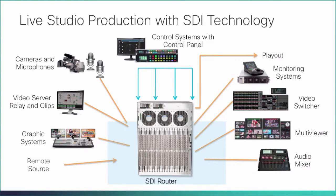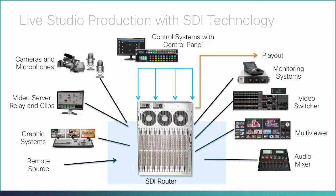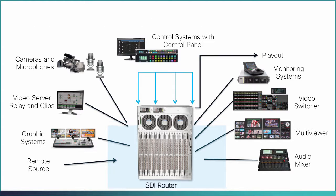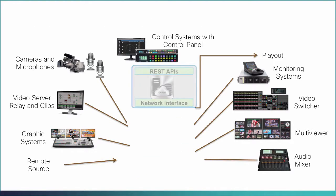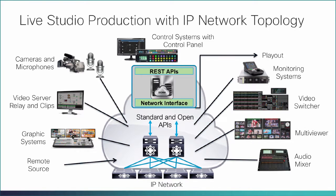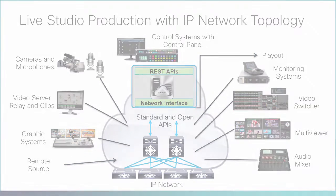Cisco's IP Fabric for Media solution replaces the SDI router in live production studios. In an IP-based infrastructure, a single cable has the capacity to carry multiple bidirectional traffic flows and can support different flow sizes without requiring changes to the physical infrastructure.